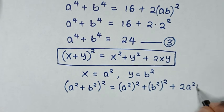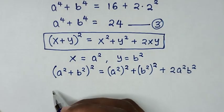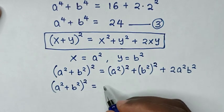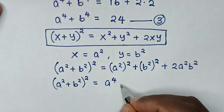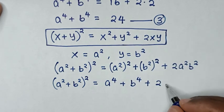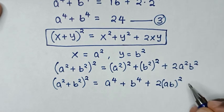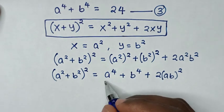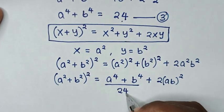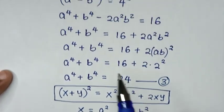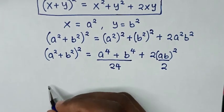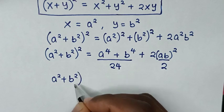Then our equation will be (a squared plus b squared) squared is equal to (a squared) squared plus (b squared) squared plus 2(a squared)(b squared), which is a to the power 4 plus b to the power 4 plus 2(ab) squared. From equation 3, a to the power 4 plus b to the power 4 is 24, and from equation 2, ab is equal to 2, so we substitute those values.